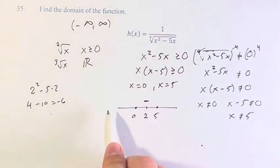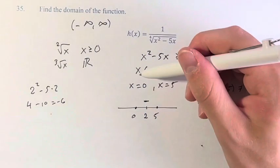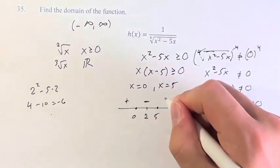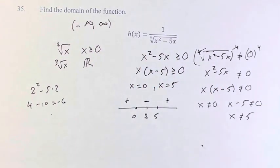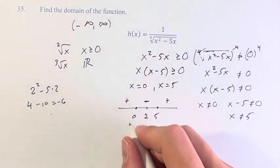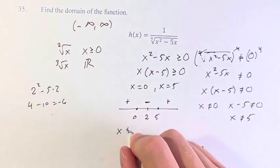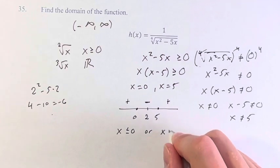And since we don't have any repeating roots, we have x is equal to 0 and we have x is equal to 5, we know that it alternates positive and negative. So therefore, from this, we know that x has to be less than or equal to 0, or x has to be greater than or equal to 5.